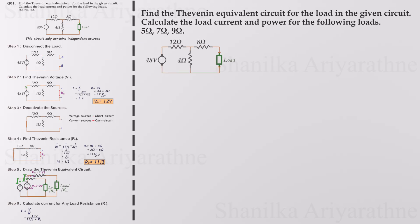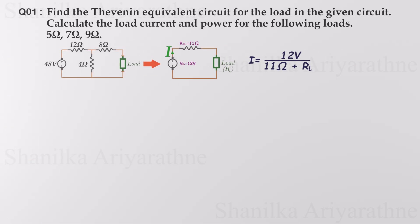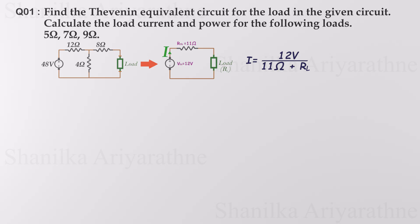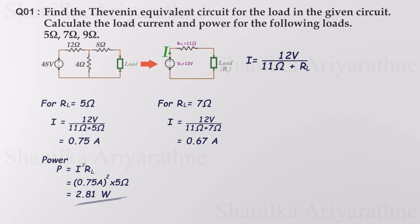We've simplified the original circuit into a much simpler one consisting of just a power source, a resistor, and the load. This Thevenin equivalent circuit can now be used for further analysis, eliminating the need to work with the original complex circuit. Let's calculate the power for each load. For a 5 ohm load, the load current is 0.75 amperes and the load power is 2.81 watts. For a 7 ohm load, the load current is 0.67 amperes and the load power is 3.24 watts.